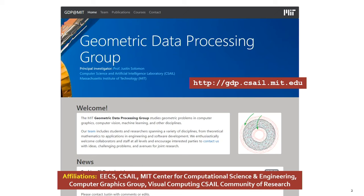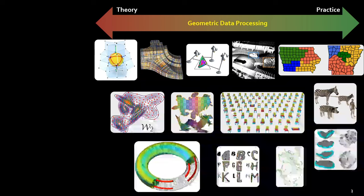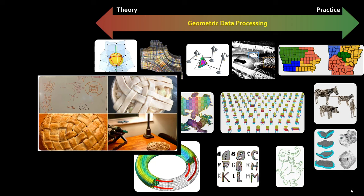I run a group here at MIT that works on problems in the applied geometry space. We've developed a reputation for being extremely broad and hard to pin down. We've worked on problems all the way from high-dimensional geometry and machine learning to computer graphics simulation. We also work on topology and singularities, and of course the real application there is in making really interesting pie crusts.